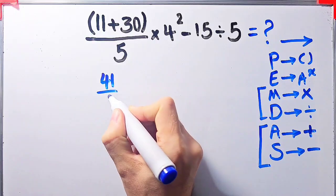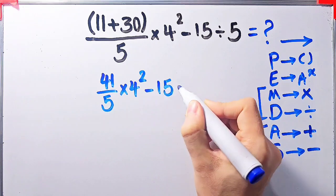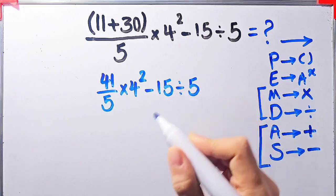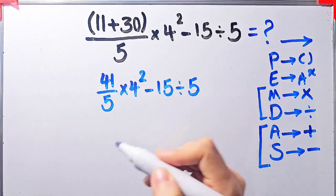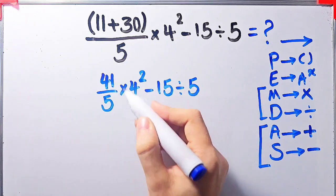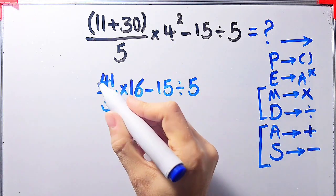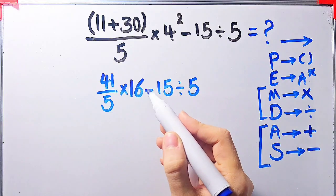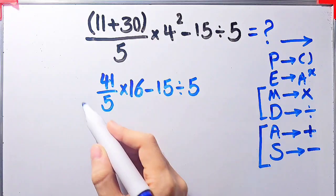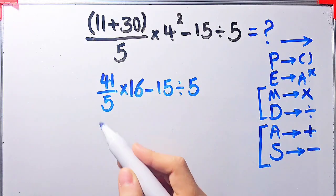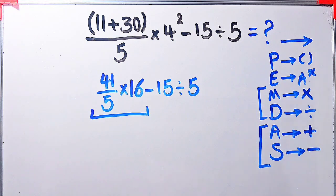Now we have 41 over 5 times 4 to the power of 2 minus 15 divided by 5. Now we have multiplication, exponent, subtraction, and division. In this step we simplify the exponent: 4 to the power of 2 equals 16. Now the question is 41 over 5 times 16 minus 15 divided by 5. We simplify the multiplication: 41 over 5 times 16 equals 656 over 5.